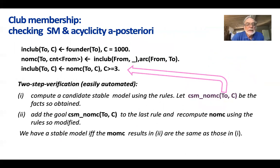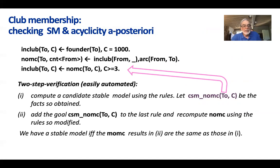If the programmer is not sure about the properties of the program, or is not sure that the database doesn't have dirty data introducing a cycle, there is an a posteriori test. This test is performed by simply computing the candidate stable model (CSM). We store the facts, then run the program with the additional check from the last rule. If the program delivers the same result, we are guaranteed to have a stable model. This is simple for programmers and can also be automated by the system.